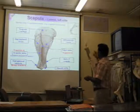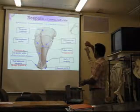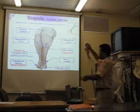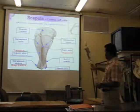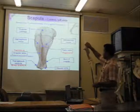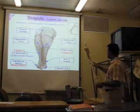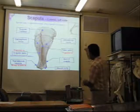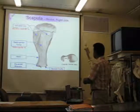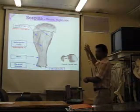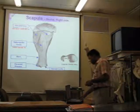There is the supraglenoid tubercle, which gives attachment to the biceps brachii muscle. The biceps brachii runs from the supraglenoid tubercle to the radial tuberosity on the radius. And the coracoid process is seen on the medial side of the supraglenoid tubercle, which is also not present in the case of ruminants.